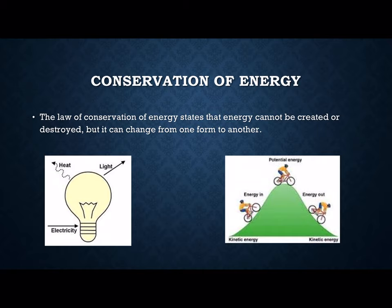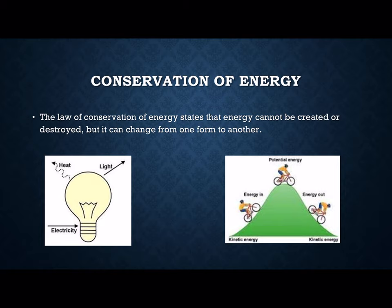The law of conservation of energy states that energy cannot be created nor destroyed, but only change from one form to another. If we look at the example of the light bulb, electrical energy is converted into light, which is the useful energy. It also produces heat energy, which is dissipated — given out into the environment. This is not useful energy, as it is not what we require from the light bulb; we only require the light. Can you think of any other energy conversions where one form of energy will be given out and not be used?